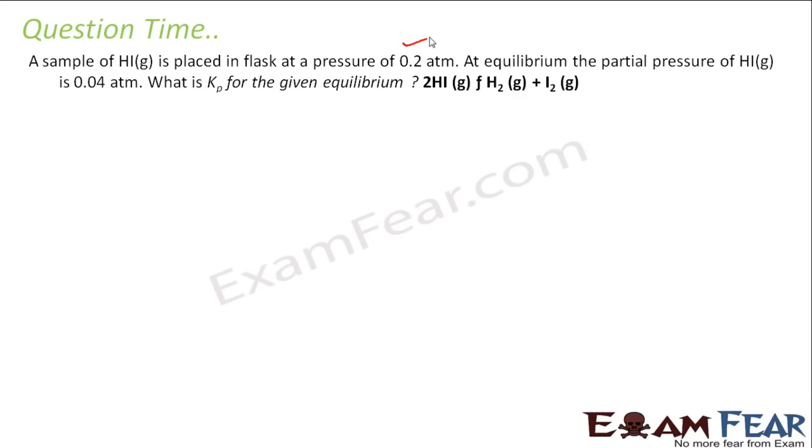The sample of HI is placed in the flask at the pressure of 0.2 atm. At equilibrium, partial pressure of HI is 0.04 atm. What is the Kp for this? So it says that I have some HI and it forms H2 plus I2, all in gas.